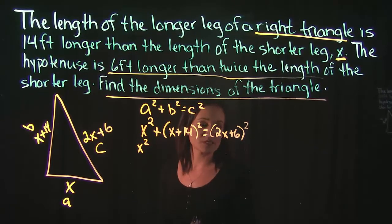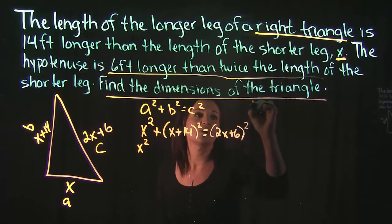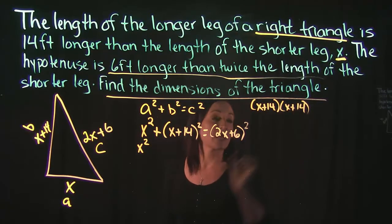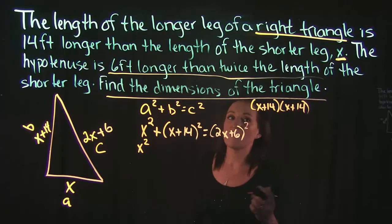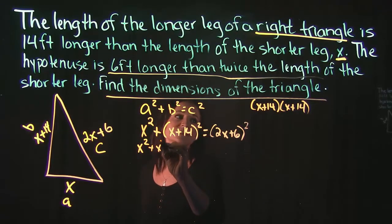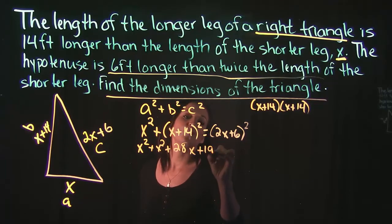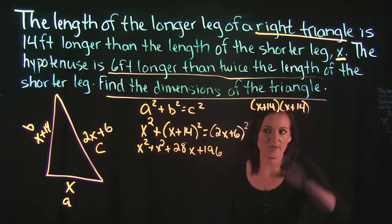Because we have x plus 14 squared we actually need to square this out. Remember that's the same thing as saying x plus 14 times x plus 14. When we multiply this together we get x squared plus 28x plus 196 when you FOIL that out.